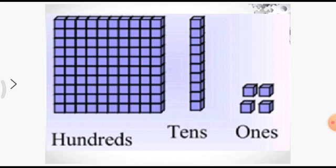Now come to the last example. There it is given one block of hundred, six blocks of tens and two blocks of ones. That means one in hundreds place, six in tens place and two in ones place, which is written as 162. I hope this must be very clear to you all.